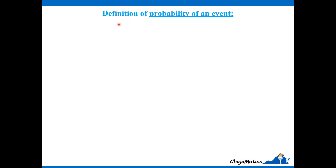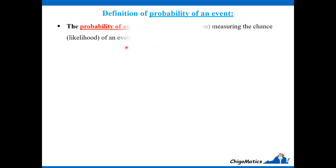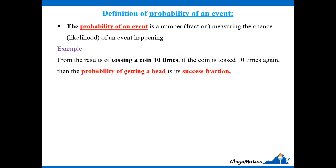Now we define the term probability of an event, still using the same example. The probability of an event is a number or fraction measuring the chance or likelihood of an event happening. From the results of tossing a coin 10 times, if the coin is tossed 10 times again, then the probability of getting a head is its success fraction from the first experiment.